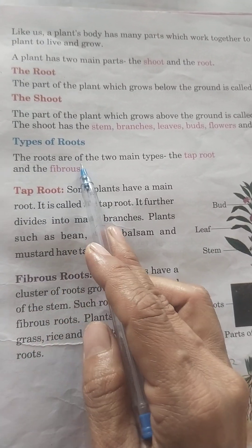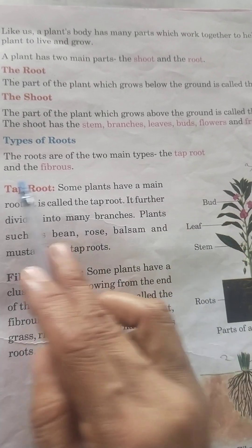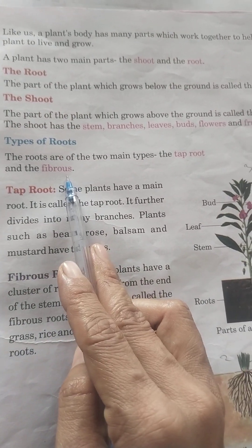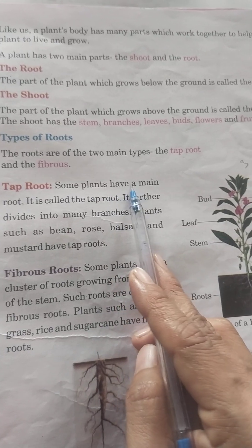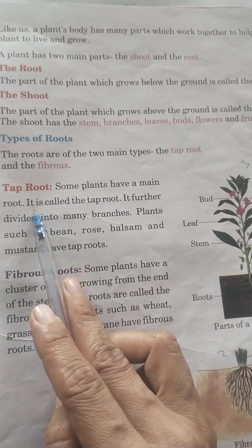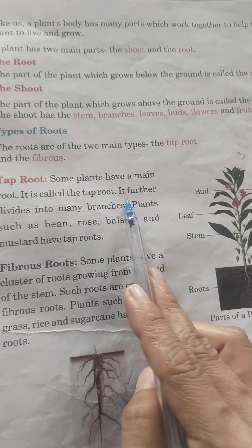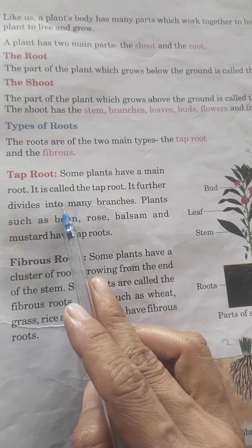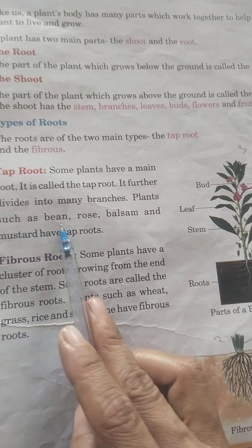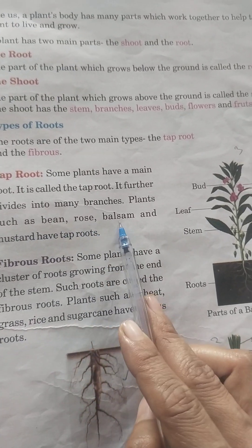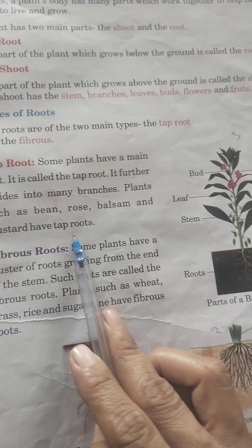The roots are of two main types: the tap roots and the fibrous roots. Tap root: some plants have a main root, it is called the tap root. It further divides into many branches. Plants such as bean, rose, balsam and mustard have tap roots.